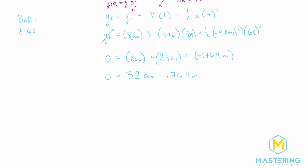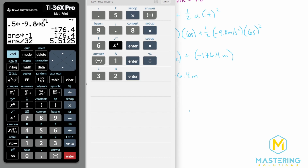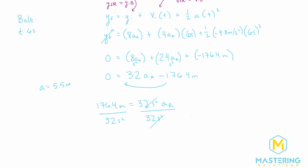The units from the rocket equations give us seconds squared here. Moving 176.4 over, we have: 176.4 meters = 32 s² × a_rocket. Dividing both sides by 32 s² gives meters per second squared, which are the correct units for acceleration. So the acceleration of the rocket is 176.4 ÷ 32, which rounds to 5.5 meters per second squared.